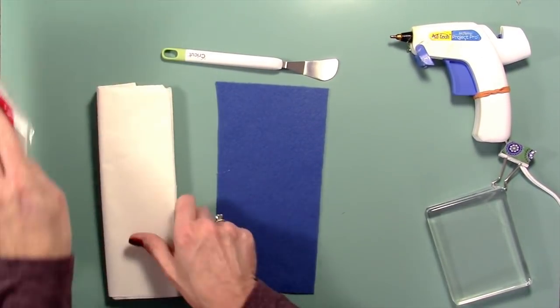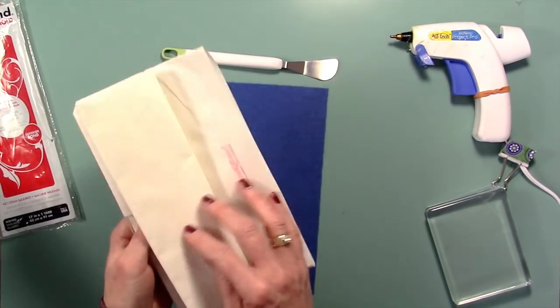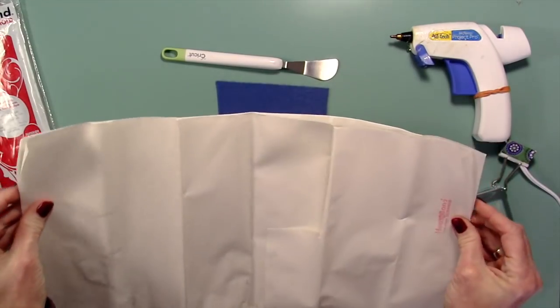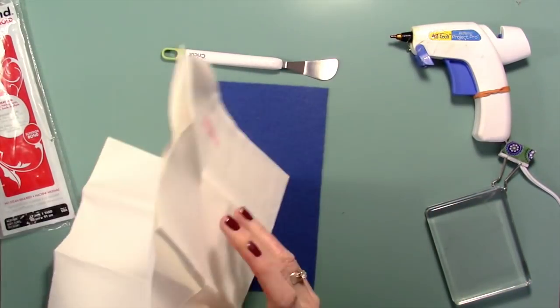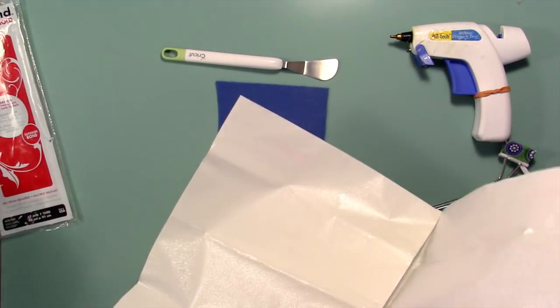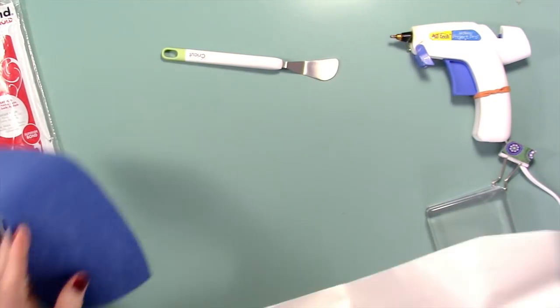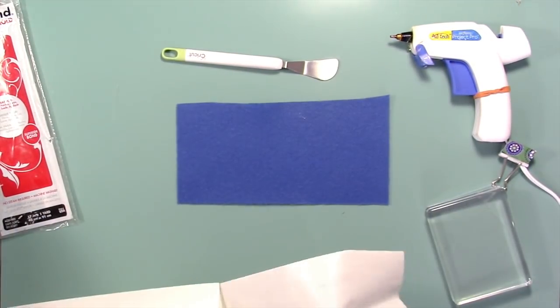Okay, so let's get started. The first thing we need to do is open up your Heat and Bond. And again, get your iron preheating on medium heat, no steam. And you can also do this with a heat press, which is how I've been doing it. But I thought for the sake of the video, I would show you how to do it with the iron.